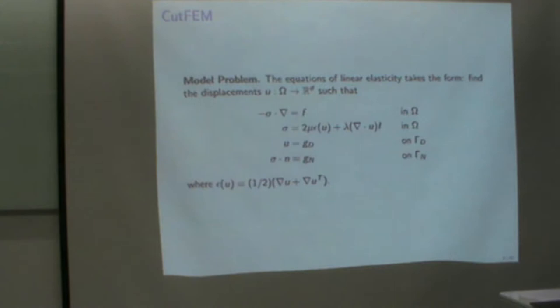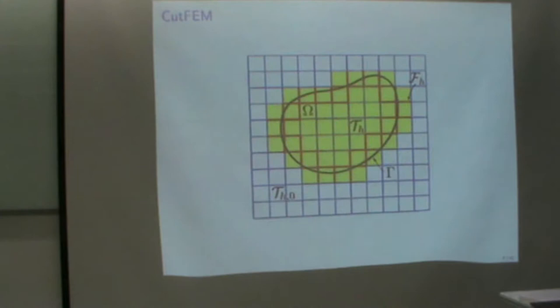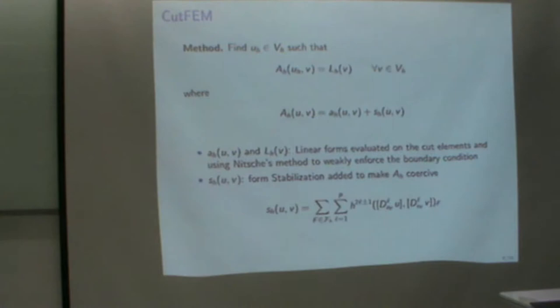So the model problem we will look at is just linear elasticity, and then we proceed as we have seen several times here. We put the domain into a background mesh, mark the active elements, and then we have the faces where we use the face penalty or ghost penalty. And the formulation is just the usual weak statement plus the stabilization. We have seen the stabilization term here, it is the jump in the derivatives. We have higher order elements, and those are scaled here with h to the 2l plus minus 1. So we use the minus 1 if we are on a Nitsche-type boundary, and the plus if we are on a Neumann-type boundary.